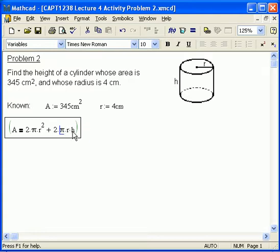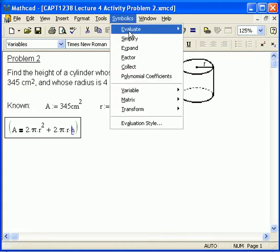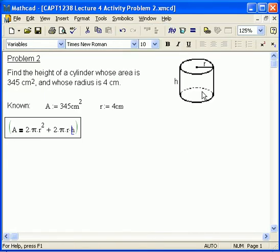Click on the equation, click on the letter H so it's selected. That's the variable we want. And then go up to the toolbar and choose Symbolics, Variable, Solve.